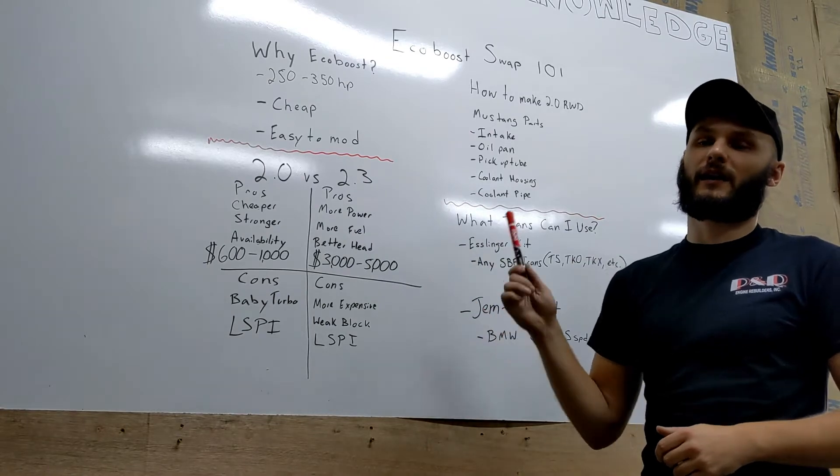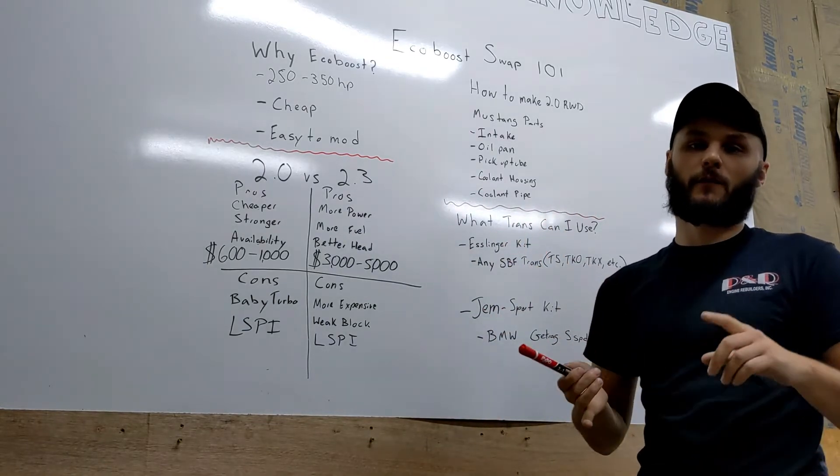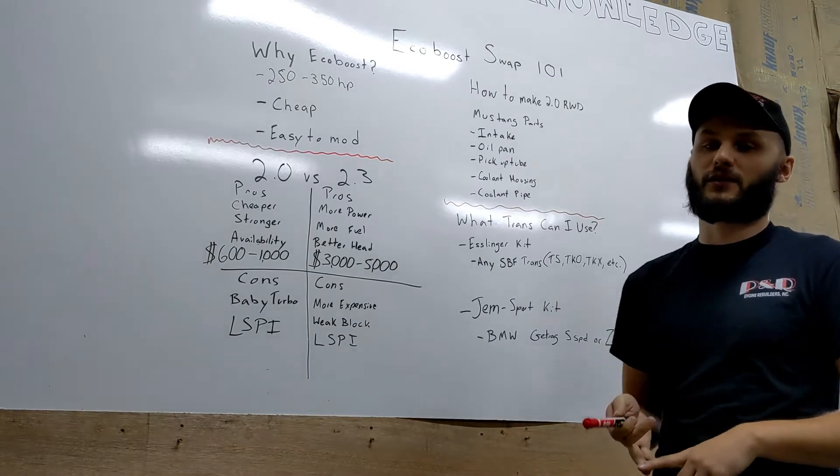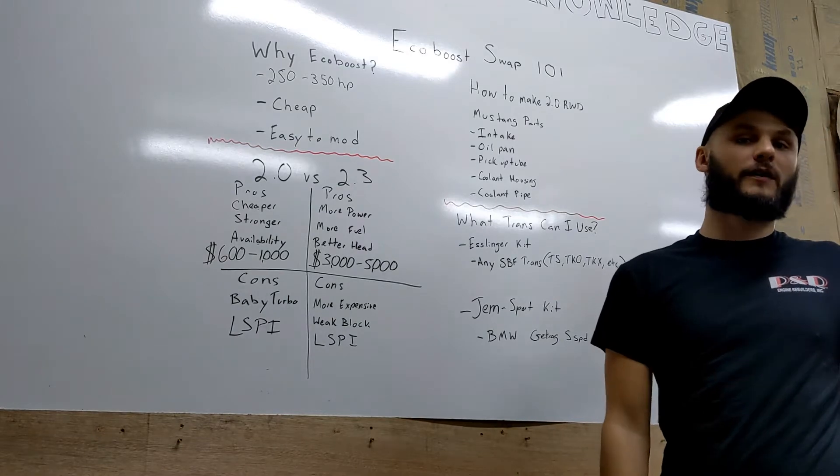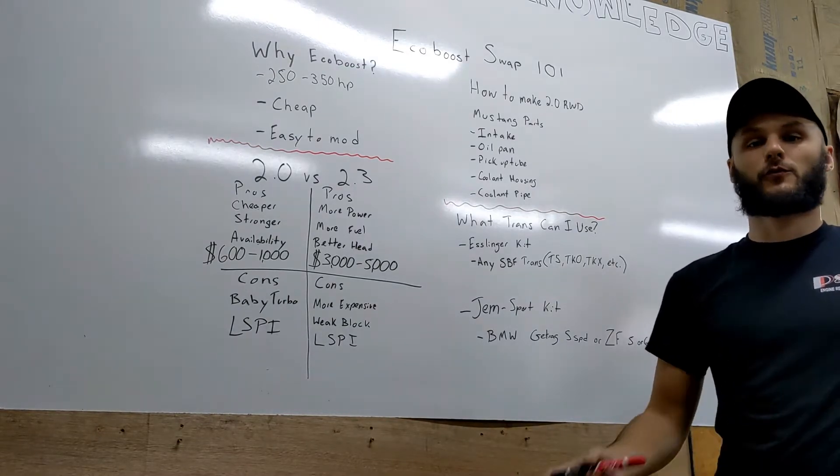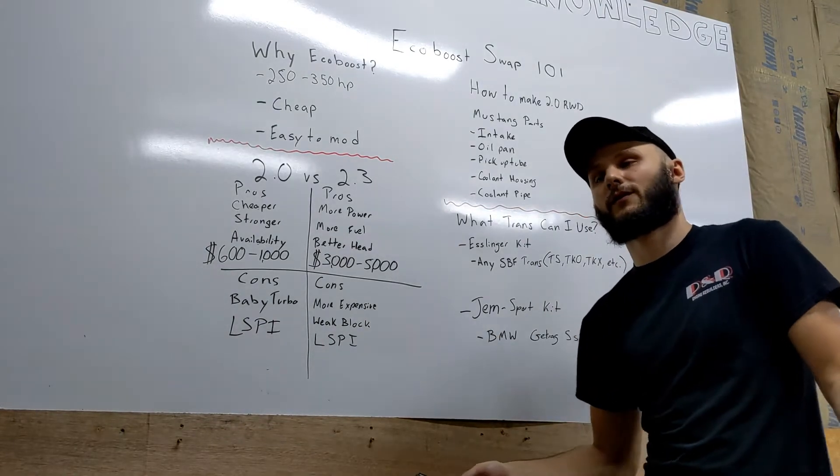EcoBoosts are also super easy to mod, particularly the 2.0. With turbo and fueling, you can get upwards of 400-425 horsepower out of $2000-$3000 for the mods, and they're super reliable at that power level. So should you go with a 2.0 or a 2.3?